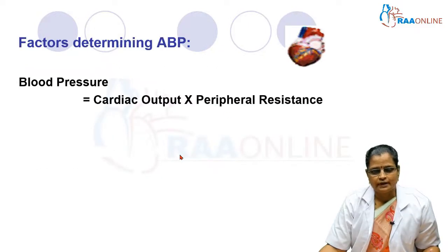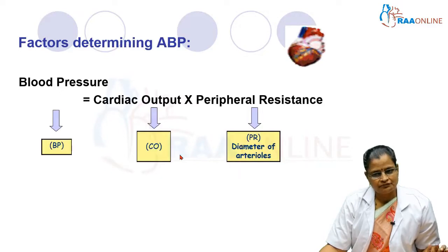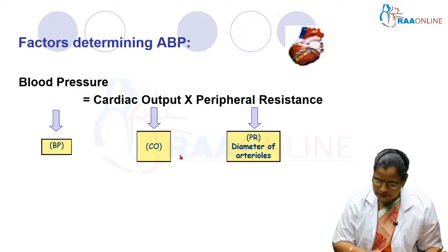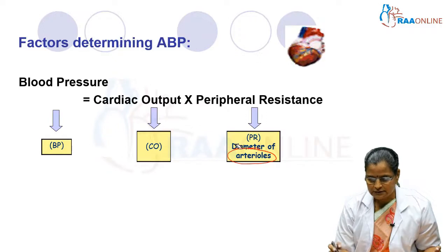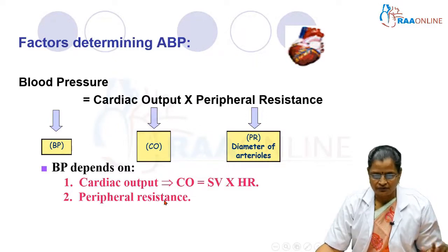What are the factors determining arterial blood pressure? Blood pressure is determined by cardiac output and peripheral resistance. Peripheral resistance depends on the diameter of arterioles, because arterioles are the seat of resistance — they are the resistance vessels.